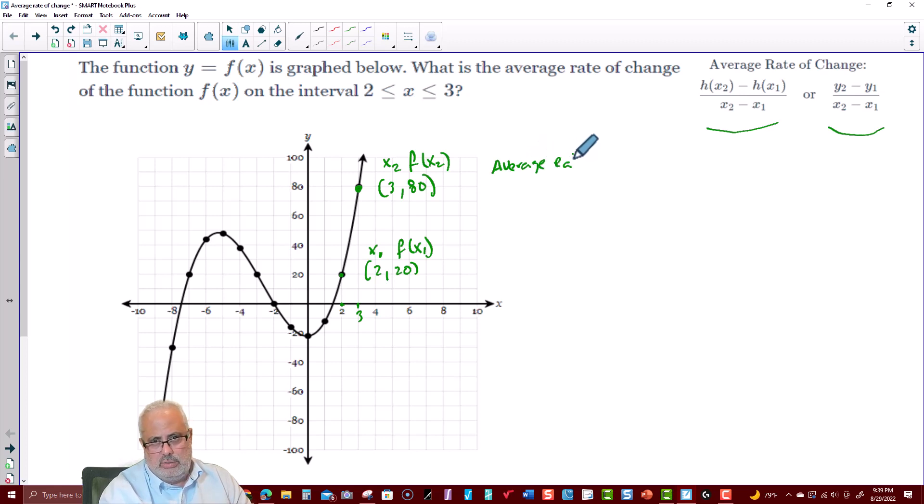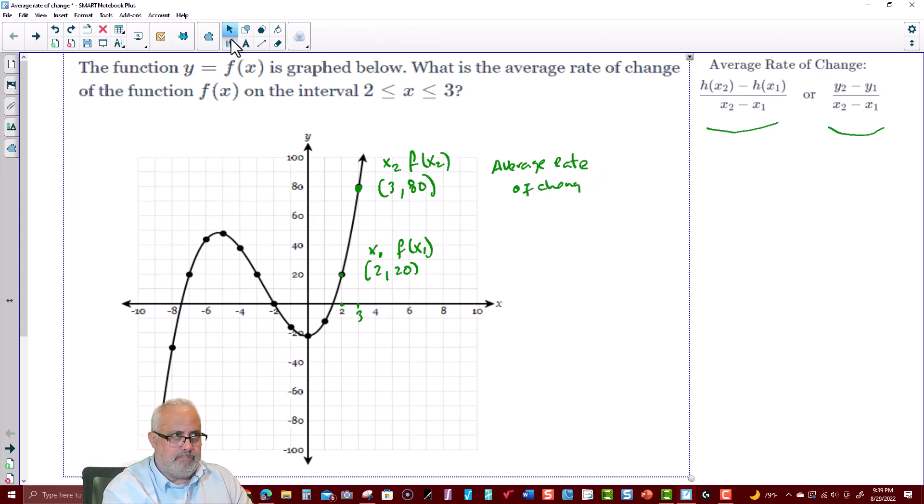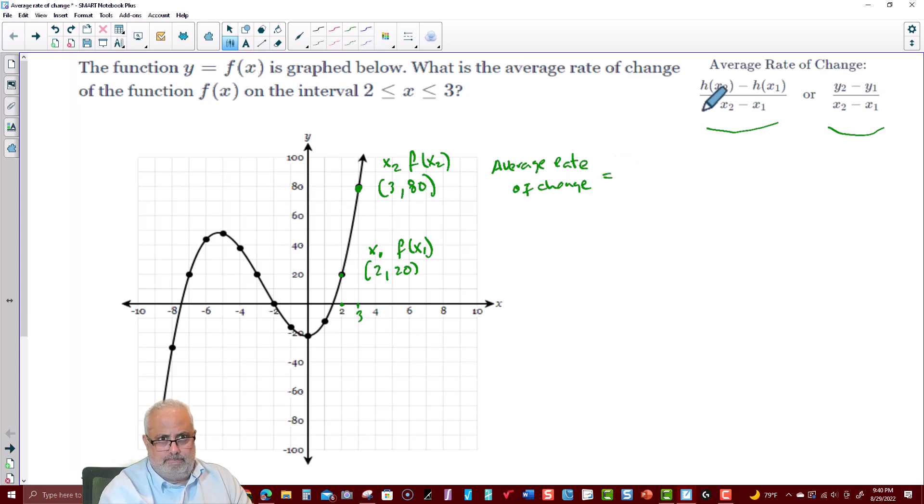The average rate of change is no more than this particular formula here. Remember, it's a slope formula by using the function notation. It will be f of x2 minus f of x1 over x2 minus x1. So the average rate of change, now f of x2 is no more than 80 minus f of x1 which is 20 over x2 which is 3 minus x1 which is 2. So the average rate of change is 80 minus 20 which is 60 divided by 1. This is the average rate of change.